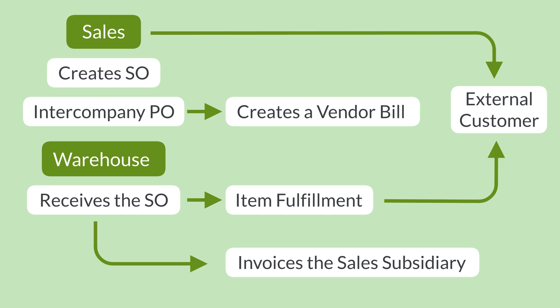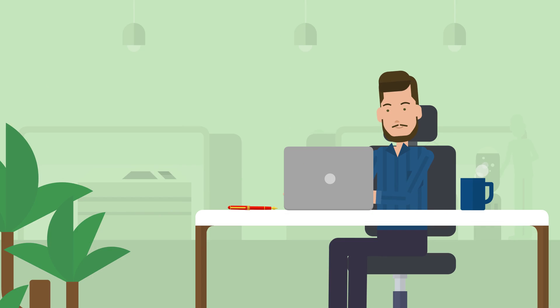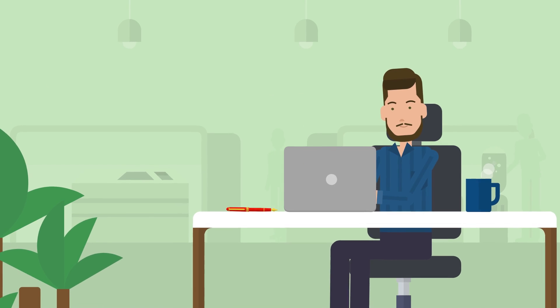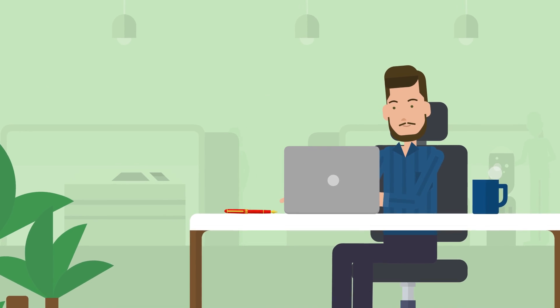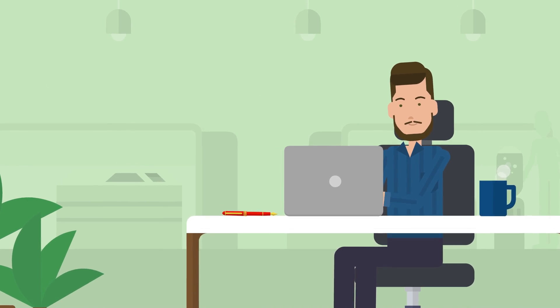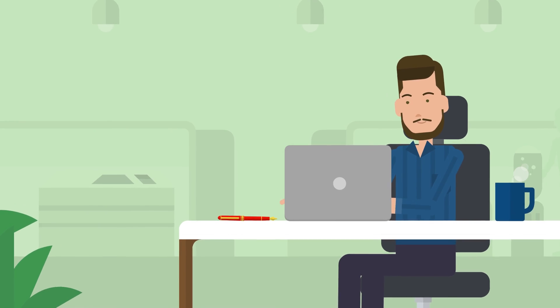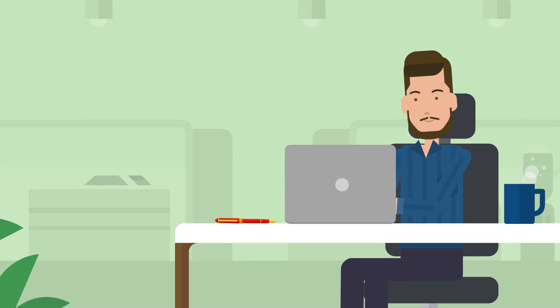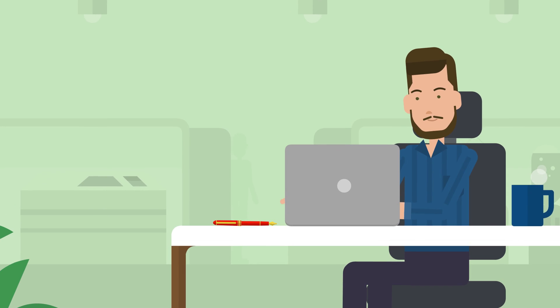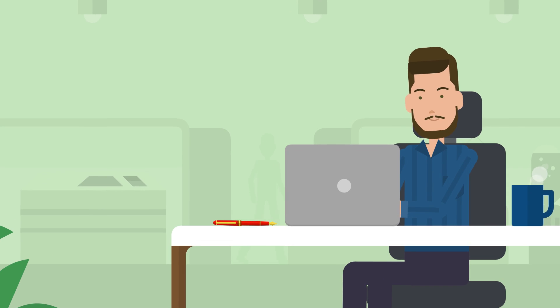That's the NetSuite Automated Intercompany Dropship process in a nutshell. When the NetSuite Automated Intercompany Dropship feature has been turned on and set up, you are prepared to manage intercompany drop shipments between any of your subsidiaries.